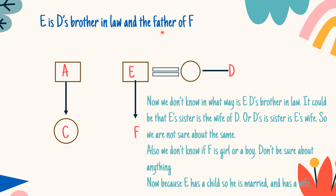E is the father of F. So we know that E has a child, which means E has to be married. Where we had ambiguity about how E and D are brother-in-law to each other, that is now clear — because E is married, E's wife would be the sister of D. However, we do not know the gender of F, so we cannot assume anything as of now.